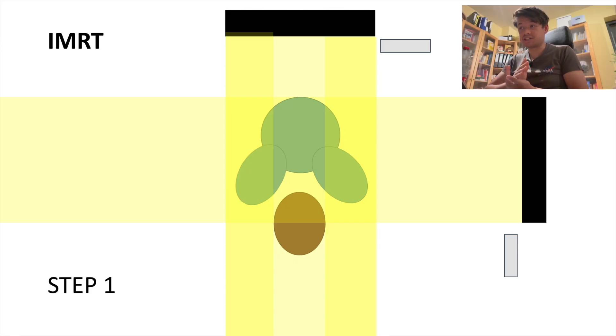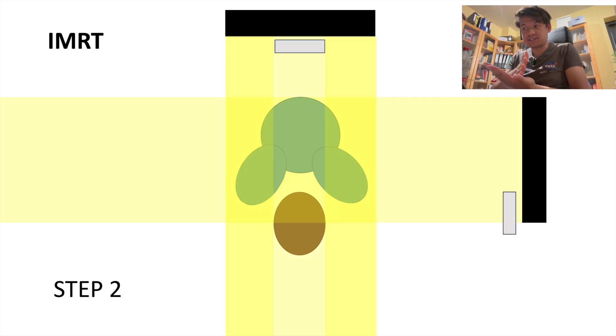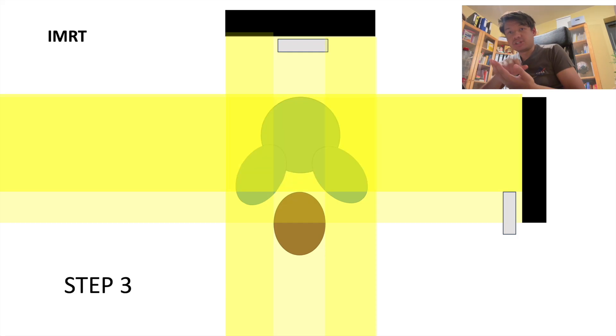Here, for example, I can spare most of the rectum using this technique. Step one, we deliver a uniform dose. Step two, the MLCs move to block part of the rectum, and step three, we turn the beam back on, covering the target while sparing healthy tissue, in this case, the rectum.